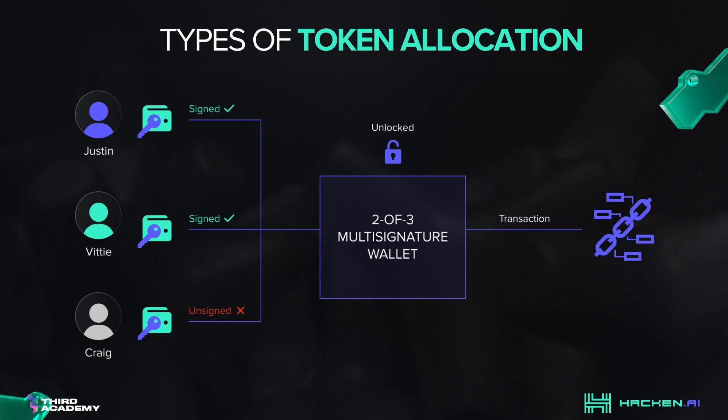Introduction to Types of Token Allocation. The typical way to allocate coins after the mint is to move them to a multi-sig that belongs to the team members or community treasury, then distribute across investors, advisors, marketing, foundation, airdrop participants, and all necessary smart contracts. It is also common practice for teams and investors to lock up tokens for a period of time to show confidence in the project, as well as protect the public from token dumps.